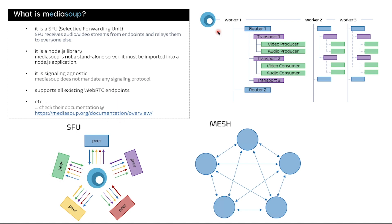Looking at the basic structure of a MediaSoup implementation: MediaSoup is based on the concept of producers and consumers — basically how a video stream flows from a producer to a consumer. Producers send media via a MediaSoup router, and a consumer receives media via the MediaSoup router as well. To create producers and consumers, you need to create transports. Transports are created from a router, and a router can represent a room.